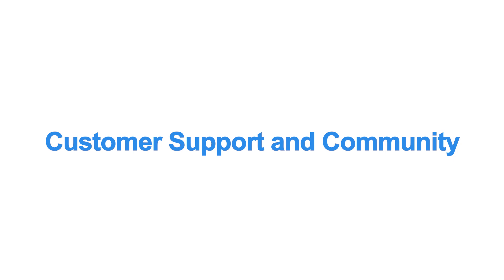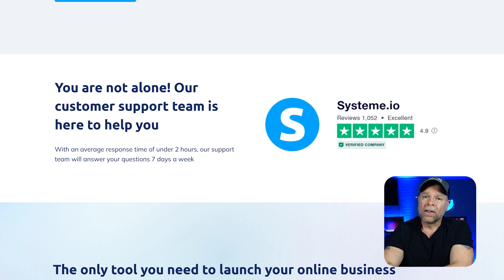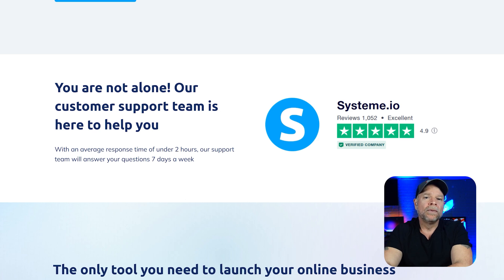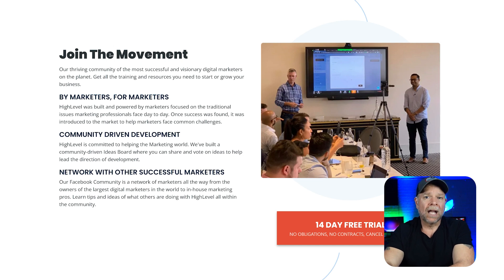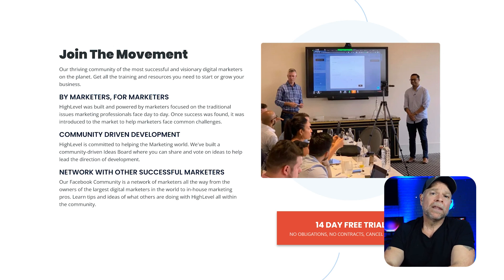Let's not skip the customer support and community aspects of these two. System.io has a pretty solid community and support system, but it's still relatively small. You might find yourself scouring forums or watching YouTube tutorials if you need in-depth help. Go High Level, on the other hand, has a thriving community of marketers, agency owners, and entrepreneurs who are willing to help you every step of the way. Plus, Go High Level offers dedicated support, and with my Jumpstart course, you'll never be stuck.